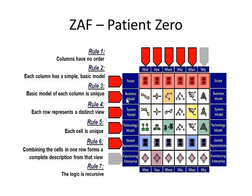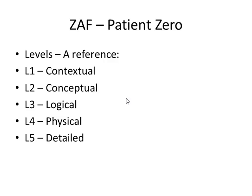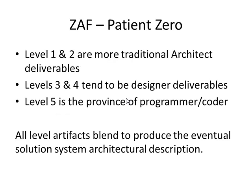Over time, certain rules for producing architectural artifacts using the ZAF approach have been developed. These rules are meant to help in architectural definition, but not act as an impediment to the artifact development process. For example, rule 5 — each cell is unique — would not necessarily imply that two or more separate but complementary artifacts could not fit in the same cell. A rough division of artifacts produced by IT roles at each level might break out as levels 1 and 2 as products from an architect, levels 3 and 4 for a designer, and level 5 for a programmer or coder. When all of the products of the different levels are present, then a complete architectural picture will develop.